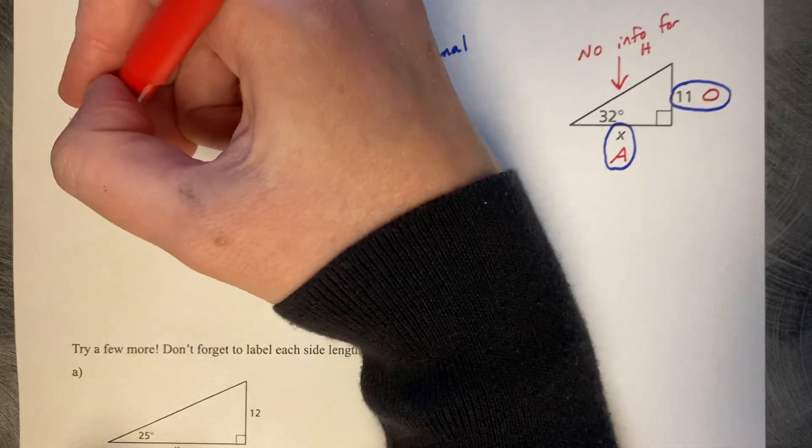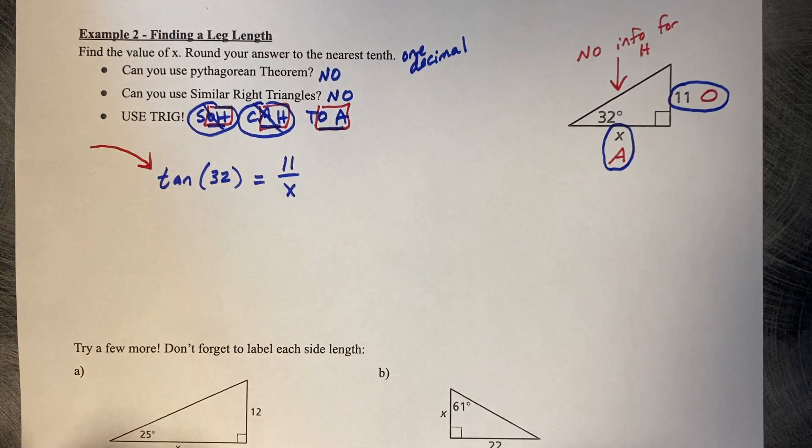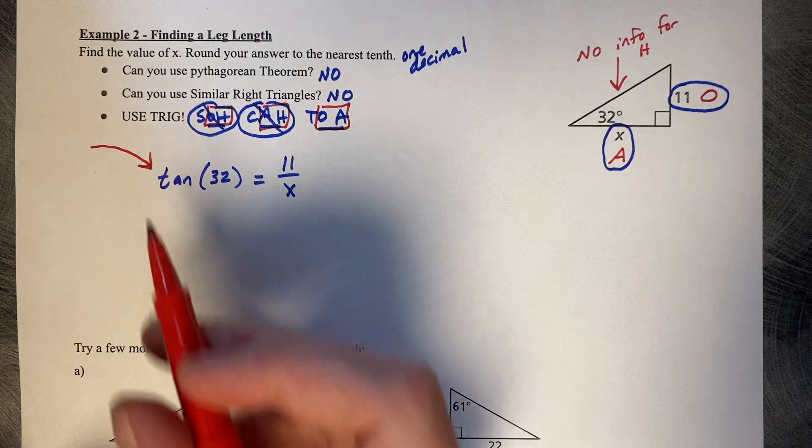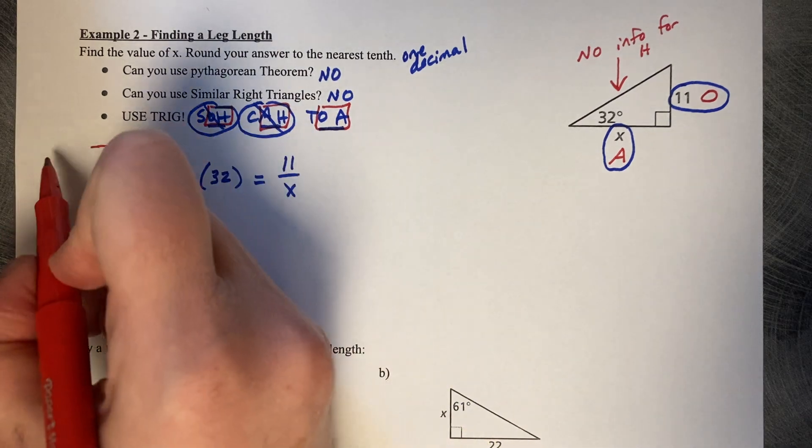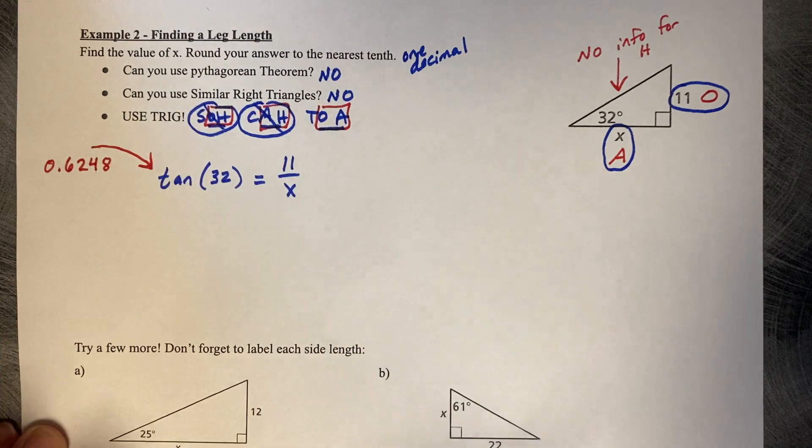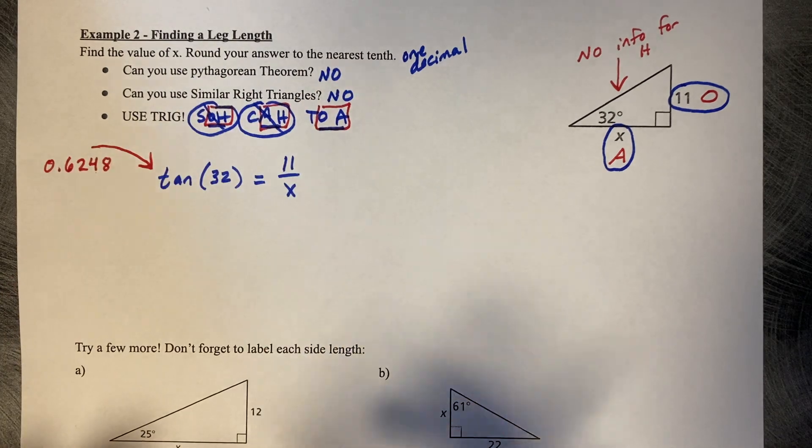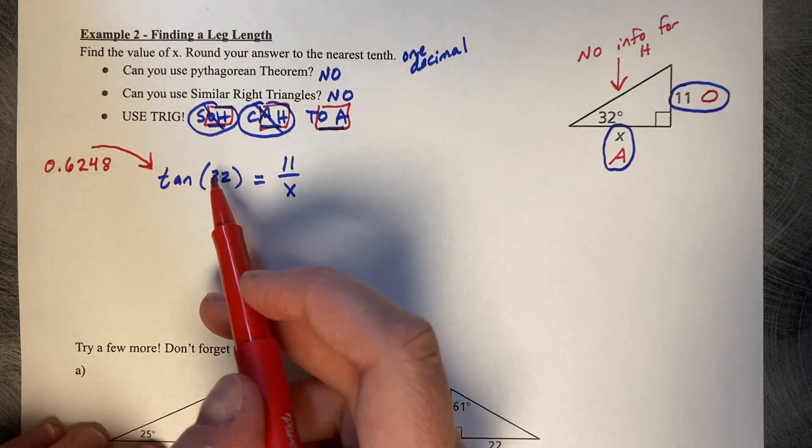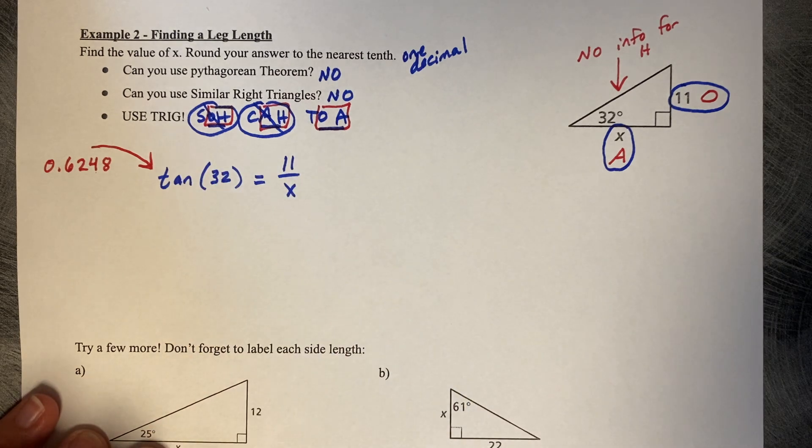You can even type that into your calculator and get a decimal. The tangent of 32 as a decimal is 0.6248 with some more decimals. So this is just a number, just a value.